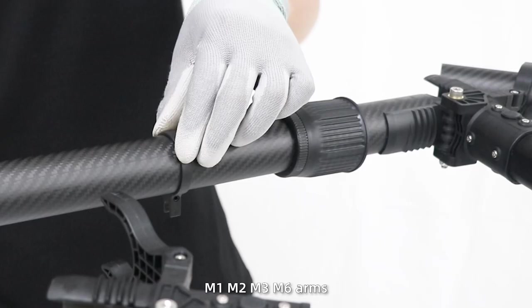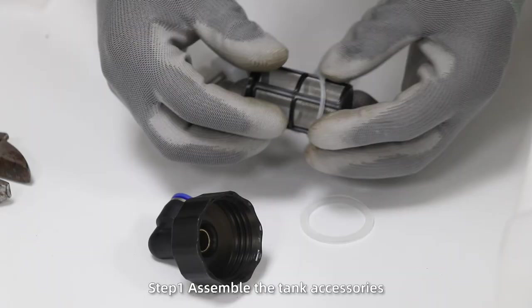Step 6: Install water pipe clamps on the M1, M2, M3, and M6 arms.